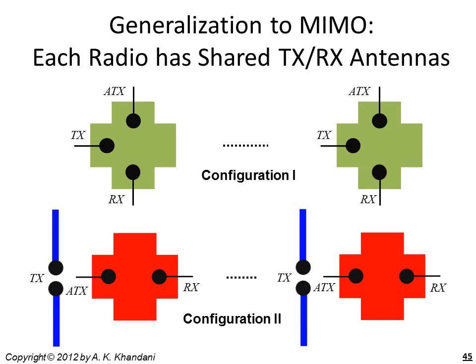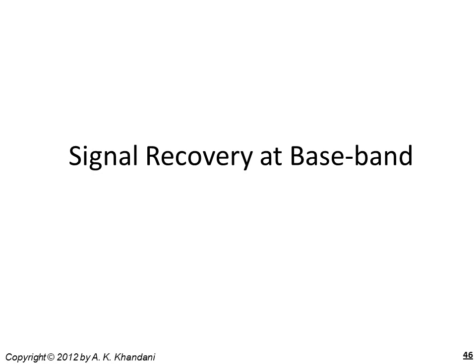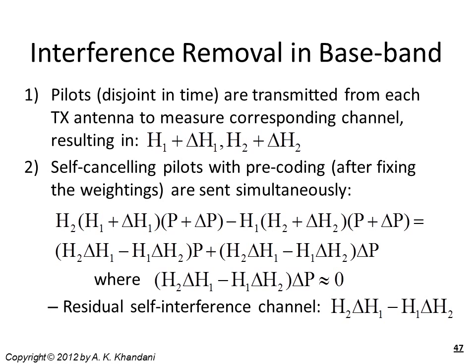The discussions so far covered reducing self-interference prior to A-to-D in the analog domain. The next step is cancellation in the digital domain. We start by sending pilots from the two transmit antennas separately in time and measure the channels H1 and H2 from the two transmit antennas to the receiver, with possible error terms delta H1 and delta H2. After measuring these channels, we send pilots from both antennas simultaneously such that they cancel each other at the receiver, with beamforming coefficients fixed at the values found in the first measurement, which will be used throughout subsequent operation.